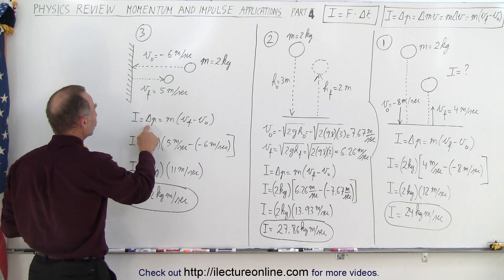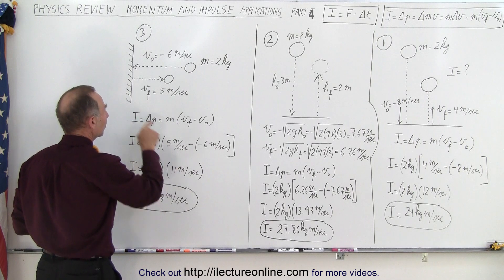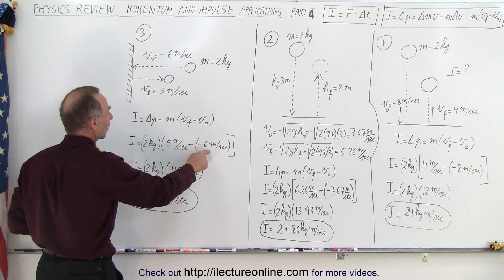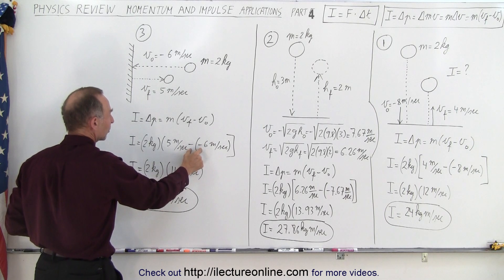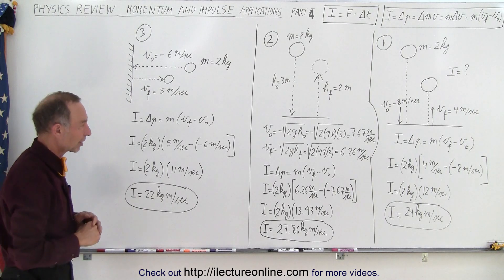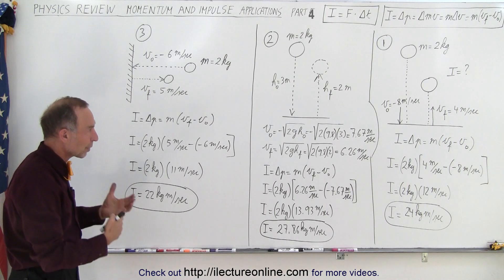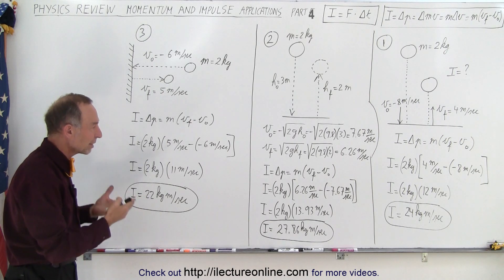And so again the impulse is the change in momentum which is m times the change in velocity. The final velocity is positive to the right, the initial velocity is negative to the left, but we're subtracting the initial velocity so this becomes positive. Five plus six is eleven, and so we end up with 22 kilogram meters per second for the impulse. So here are some practical examples of how to deal with impulse relative to momentum.